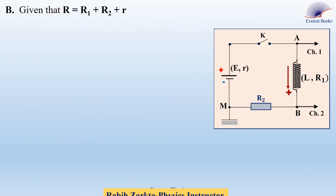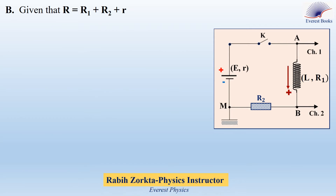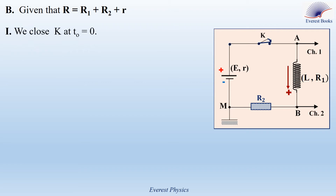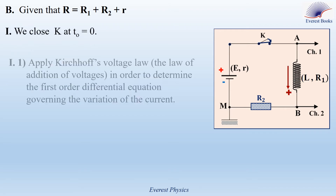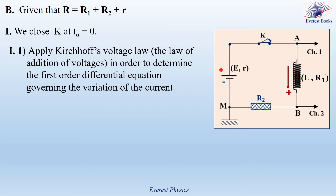Part B. Given that capital R equals R1 plus R2 plus small r. Part I, we close the switch at time zero. Part I1: apply Kirchhoff's voltage law, or the law of addition of voltages, in order to determine the first-order differential equation governing the variation of the current. Kirchhoff's voltage law: UAM equals UAB plus UBM.